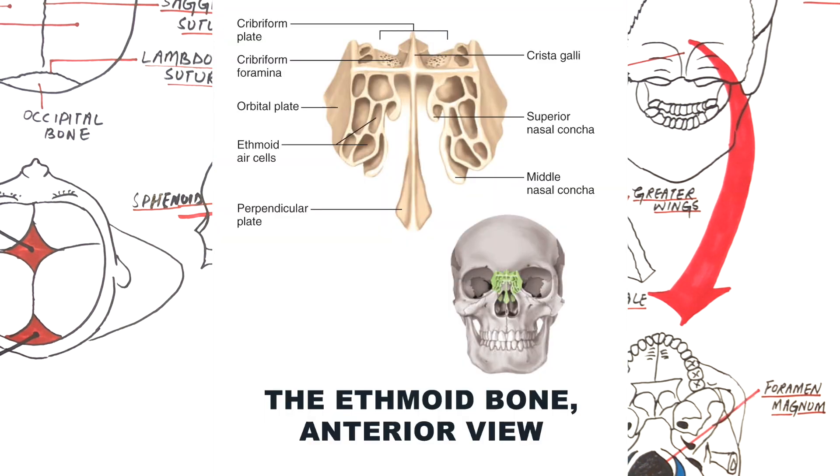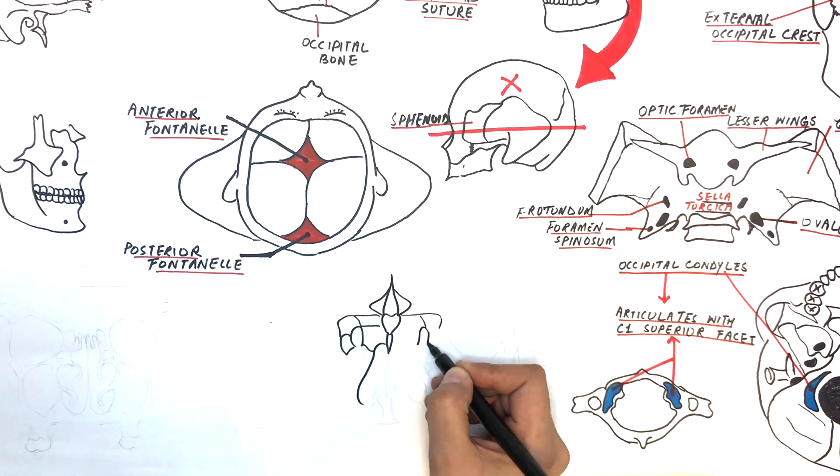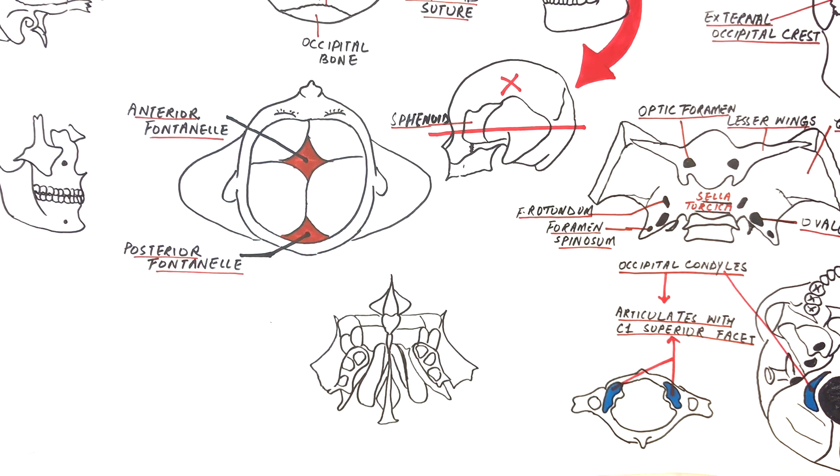The last bone we have is the ethmoid bone, seen here from the frontal view of the skull. Starting from the top to the bottom, it has got a crista galli, which is the site of attachment for the falx cerebri. Falx cerebri is a dural partition separating the two cerebral hemispheres. Extending from the crista galli is the perpendicular plate. This plate makes the upper and bony part of the nasal septum.